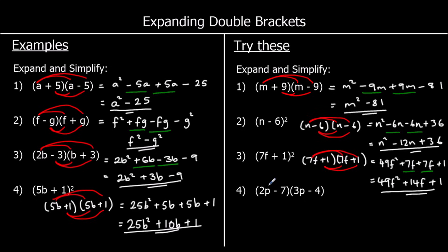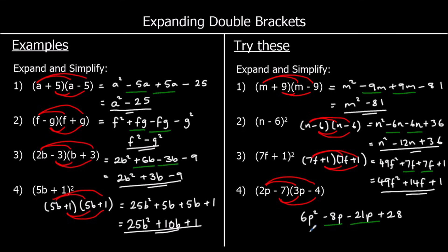The last one: 2p times 3p is 6p squared. 2p times negative four — two times negative four is negative eight — so negative 8p. Negative seven times 3p is negative 21p. And negative seven times negative four is positive 28. Collecting the like terms: we've got 6p squared, negative 8p take away 21p goes to negative 29p, plus 28.